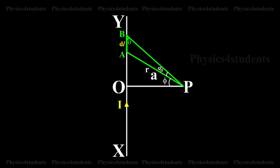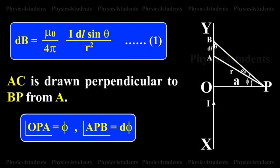According to Biot-Savart law, the magnetic induction at point P due to the current element I dL is dB equals μ0 by 4π times I dL times sin θ by R squared. This is equation 1.